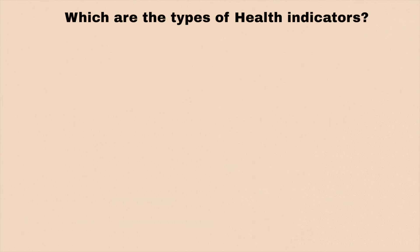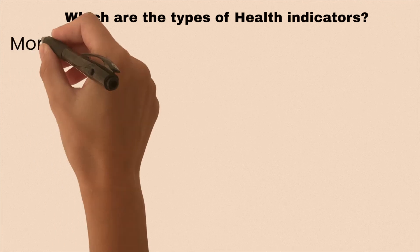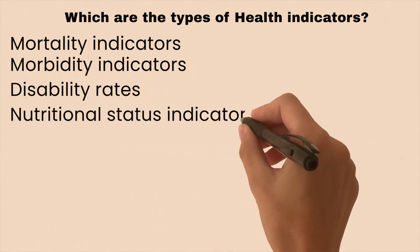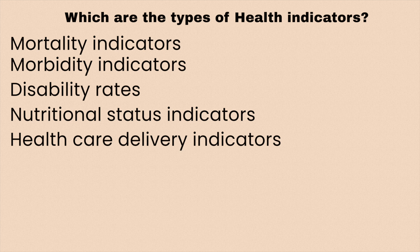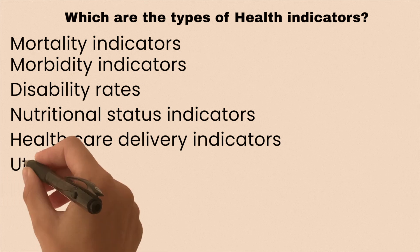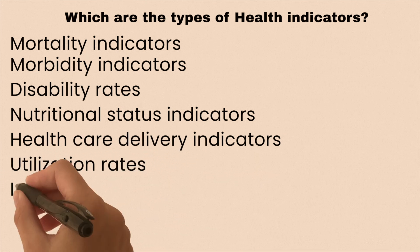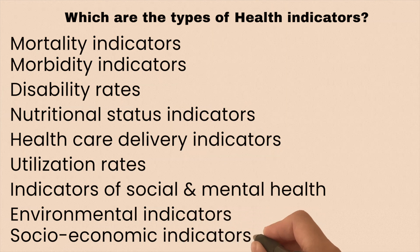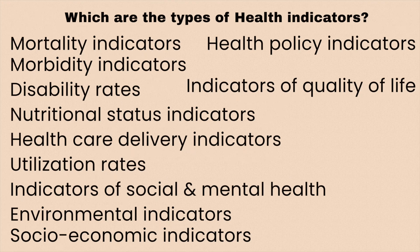There are 12 different types of health indicators used in health: mortality indicators, morbidity indicators, disability rates, nutritional status indicators, utilization rates, indicators of social and mental health, environmental indicators, socioeconomic indicators, health policy indicators, indicators of quality of life, and other indicators. Let us now talk about some common examples of health indicators.